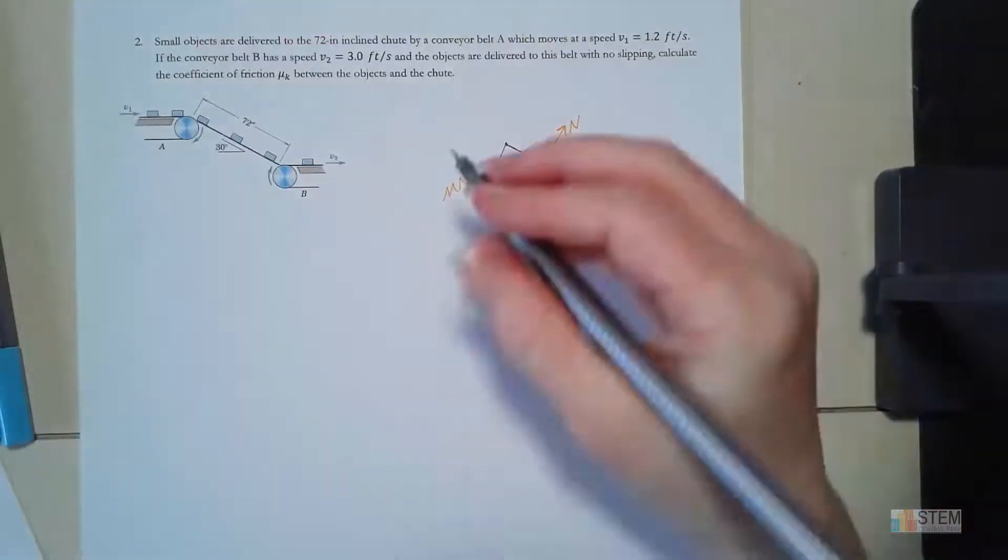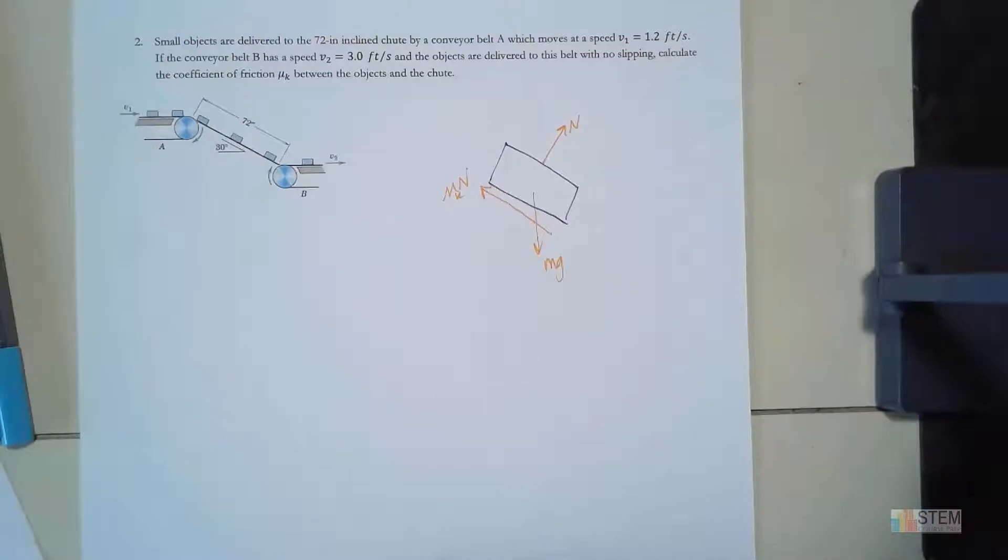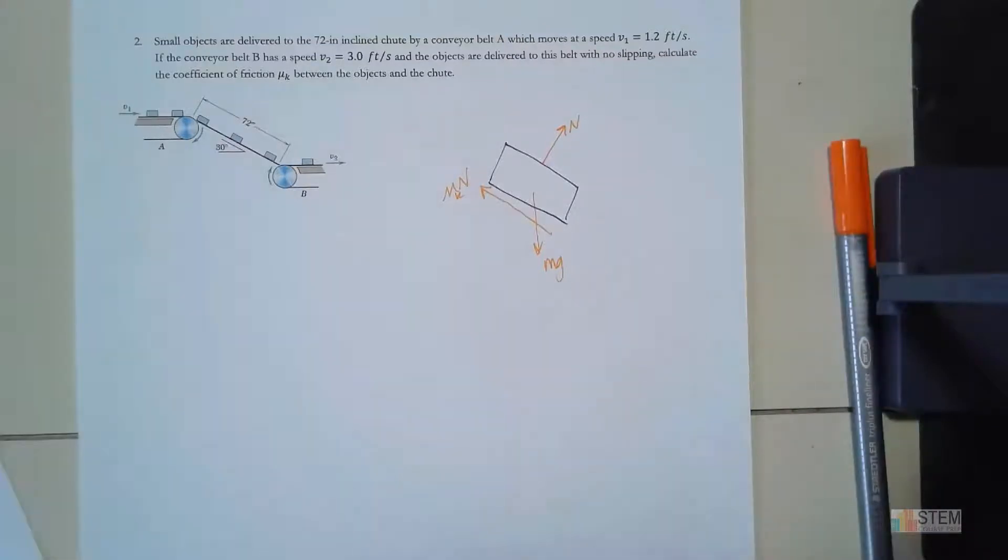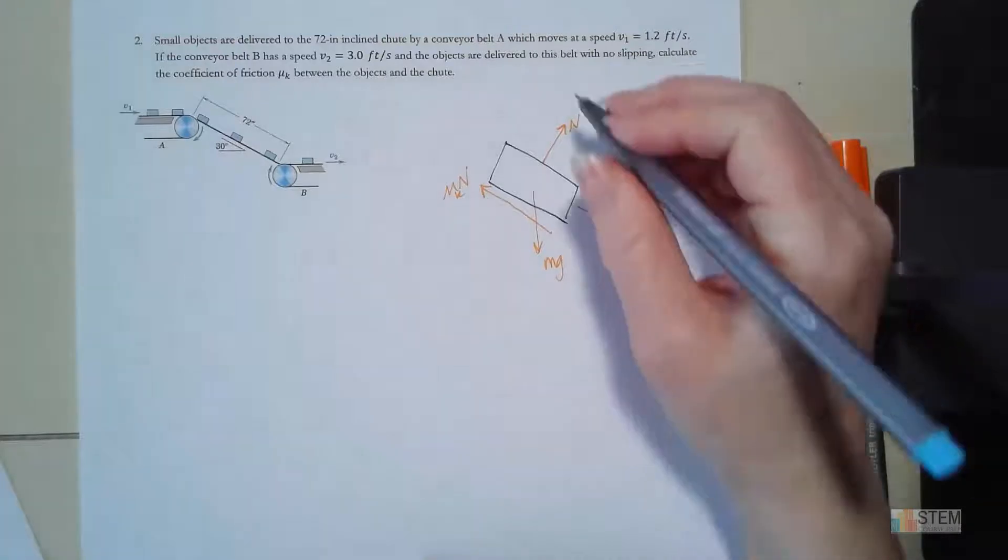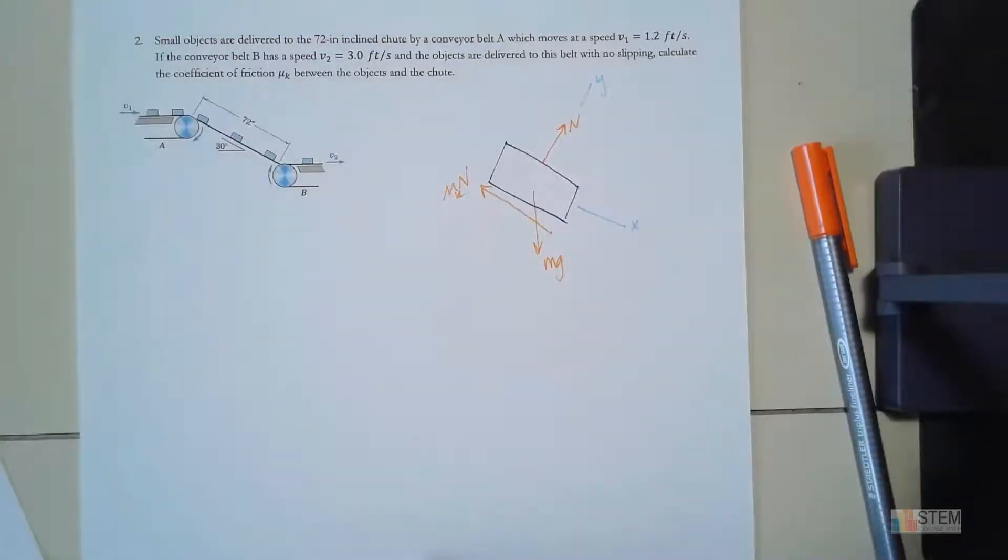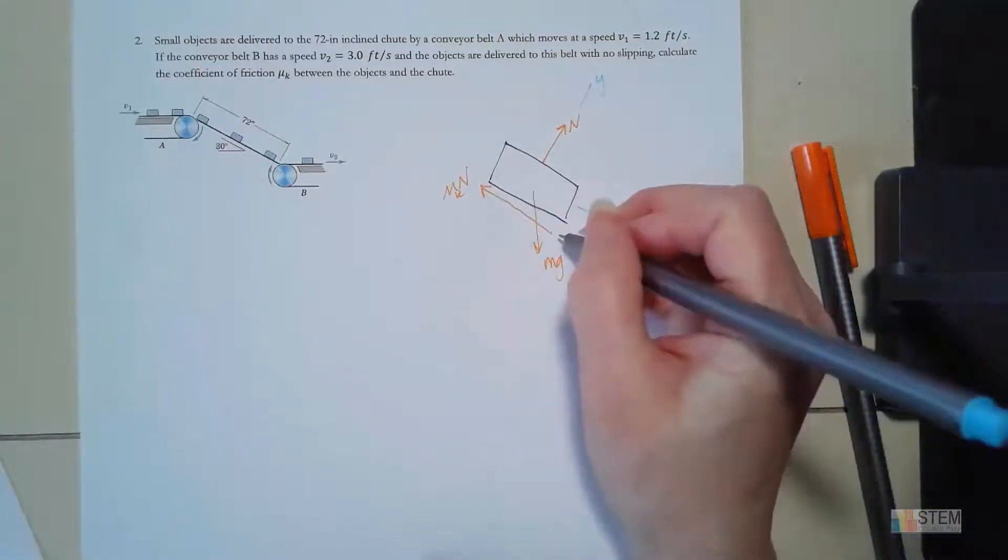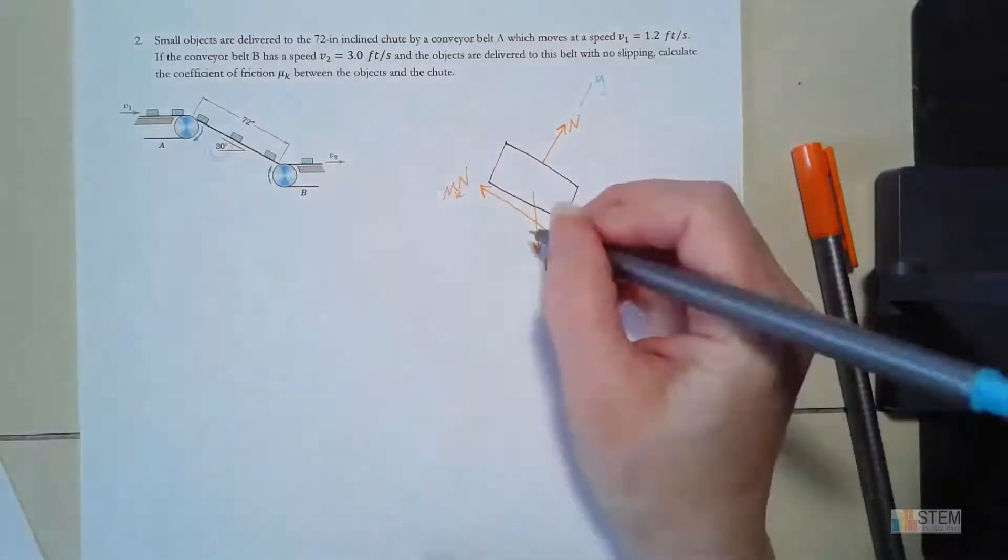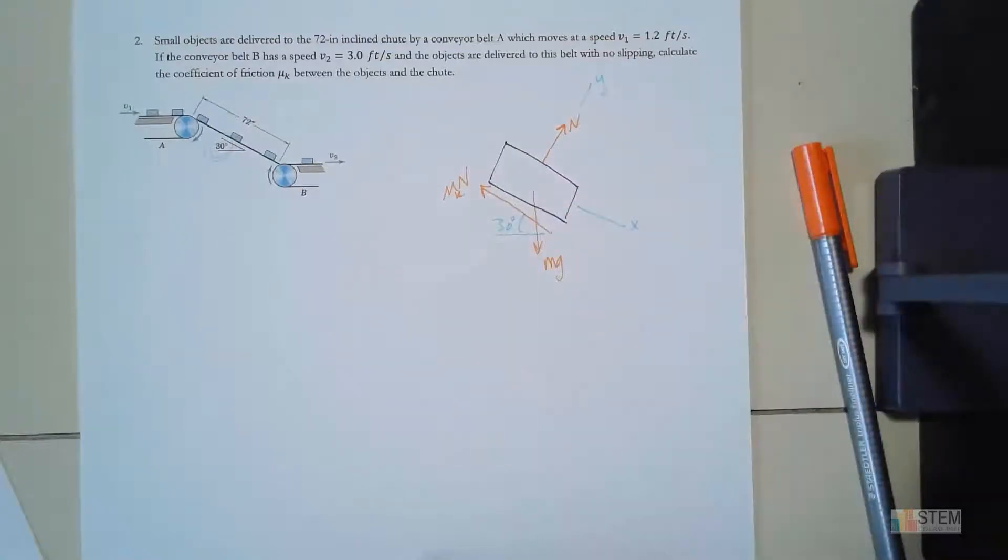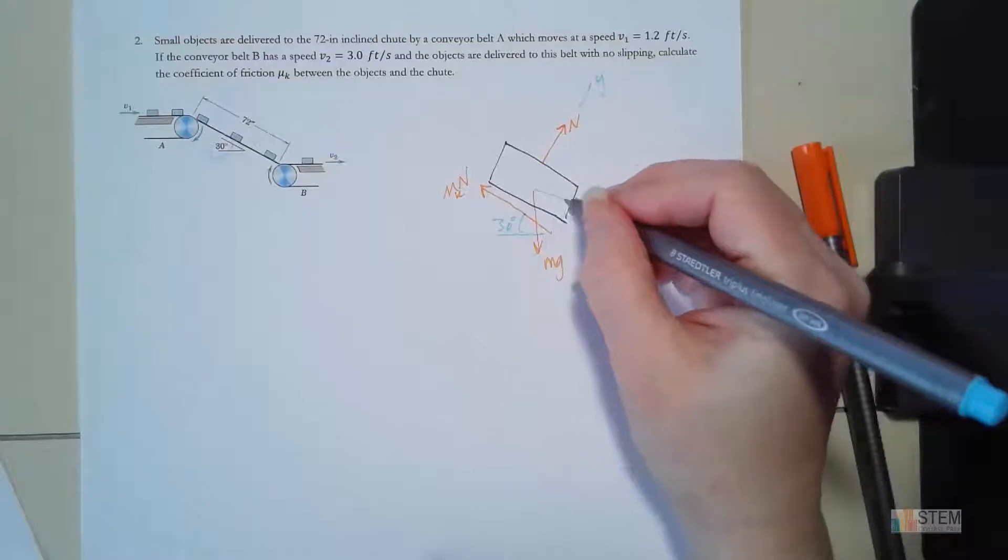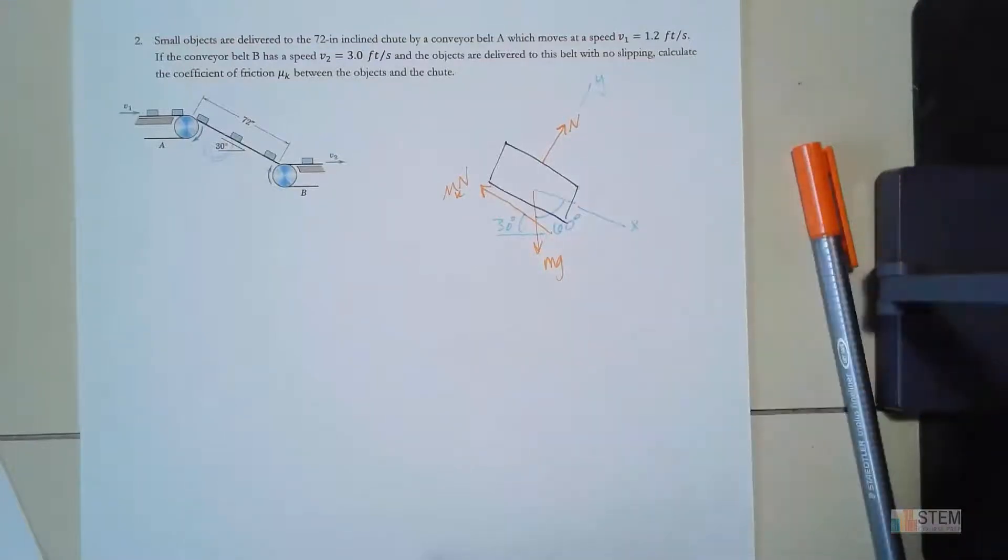So we have mu times n, mu k here since that's what it's looking for. Next thing we want to do is label our coordinate system. That'll be x, that'll be y, just like in that last problem. And then we need to look at our angle. Here we have this 30-degree angle, so that's going to be 30 degrees and this here would be 60 degrees.